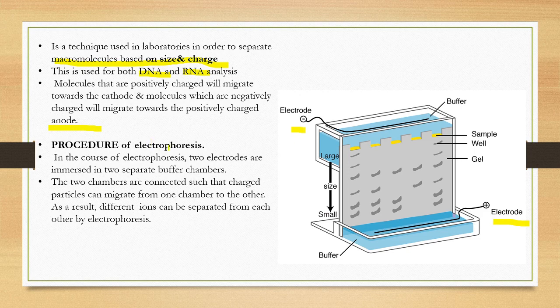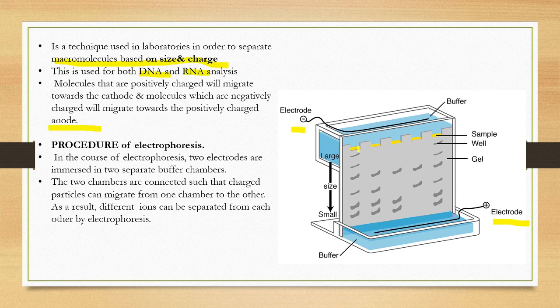In the procedure of electrophoresis, there are two electrodes immersed in separate buffer solutions — the anode is immersed in one chamber and the cathode in another. The two buffer chambers are connected so that charged particles can migrate from one chamber to the other, and different ions can be separated from each other.